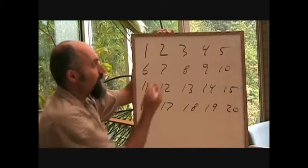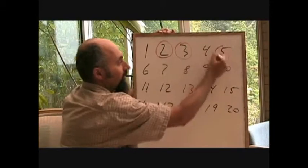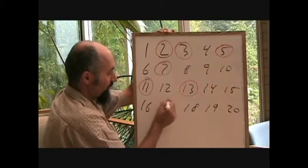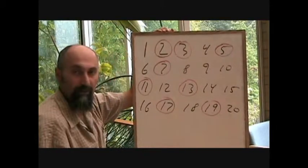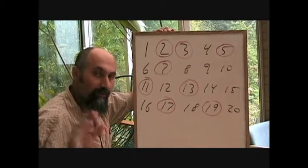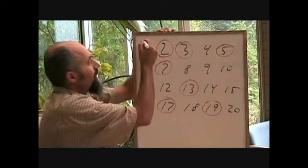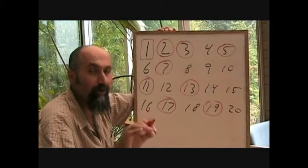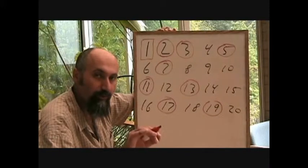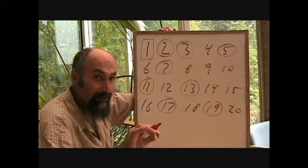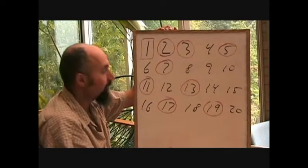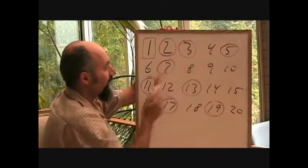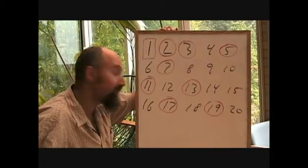Let's circle the prime numbers: we've got 2, 3, 5, 7, 11, 13, 17, and 19. Now, 1 is a special number — it's not a prime number, but as far as you're concerned in high school you could think it was. The definition of prime numbers is: any natural number that can only be divided evenly by one and itself. So between 1 and 20, there aren't 20 numbers — there's only 9.